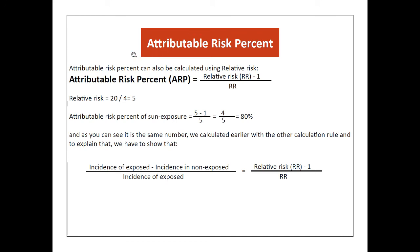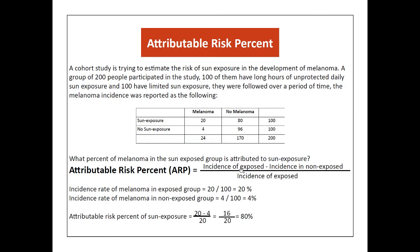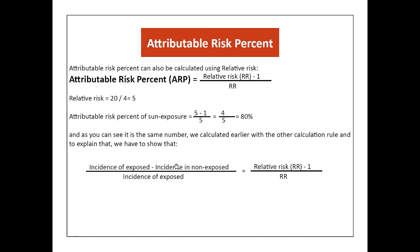The attributable risk percent can also be calculated using a different method: relative risk minus 1, divided by relative risk. For the previous example, the relative risk was 5, and this formula also gives 80%, the same result we calculated before.